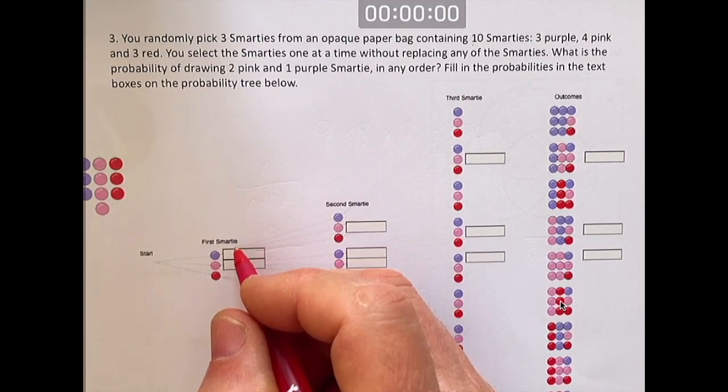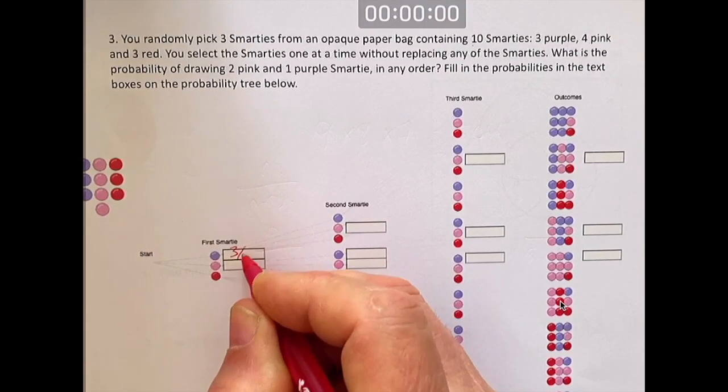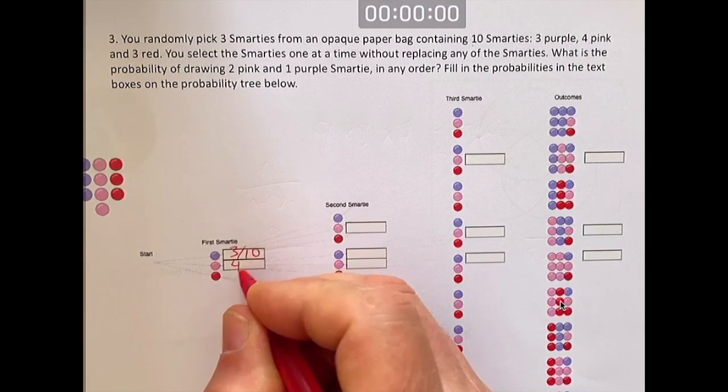On the first draw, there are 10 Smarties in there. How many are purple? Three are purple out of 10. Four are pink out of 10.